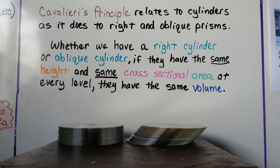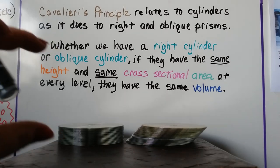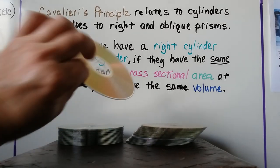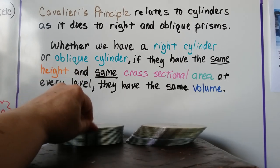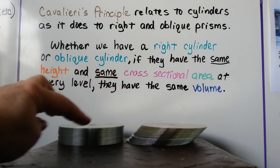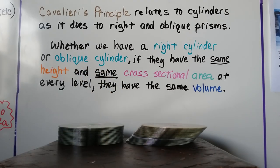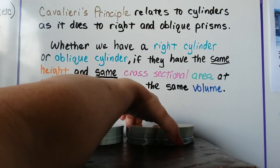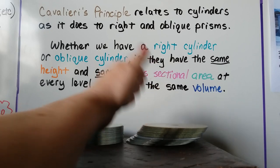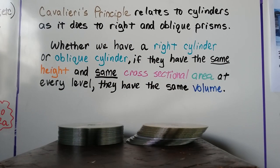Cavalieri's Principle relates to cylinders just as it does to right and oblique prisms. In the last video, we used SAT cards stacked straight and stacked obliquely. Here I have 25 DVDs — one stacked as a right cylinder, one stacked as an oblique cylinder. There are still 25 DVDs, all the same area at every level. Both stacks have the same volume whether right or oblique. We can slant one and it still has the same volume. That's Cavalieri's Principle.